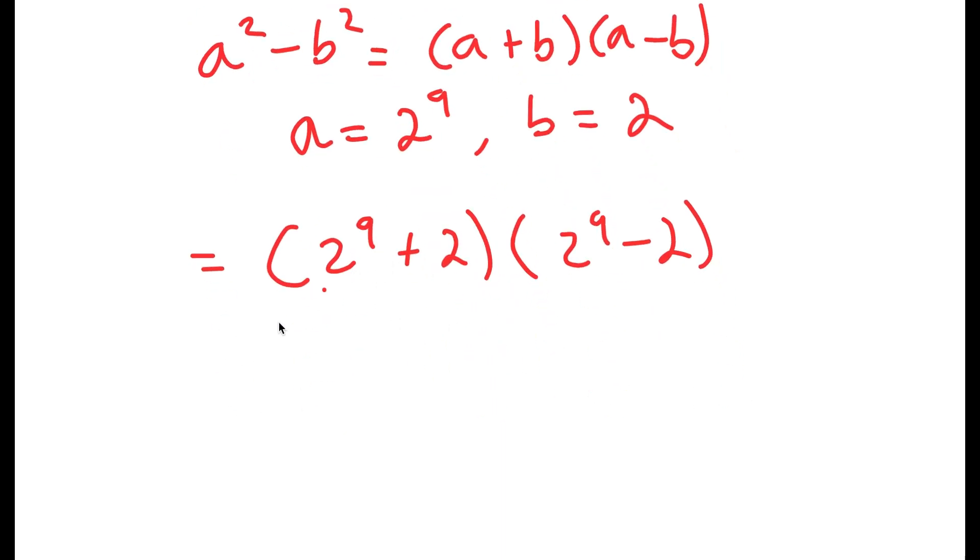Now, if you already didn't know, 2 to the power of 9 is equal to 512. So I get 512 plus 2 times 512 minus 2.